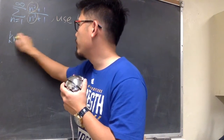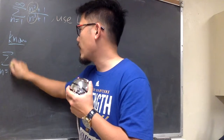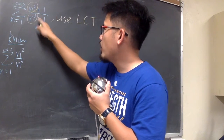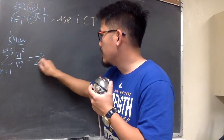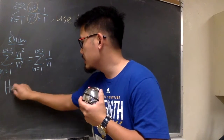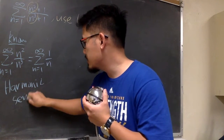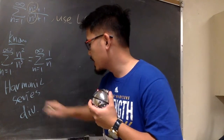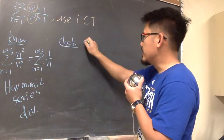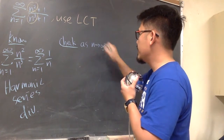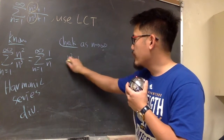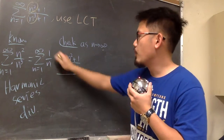We will first put down the things that we know: sigma when n goes from 1 to infinity. We look at n squared over n to the third power, which gives us sigma when n goes from 1 to infinity of 1 over n. We know this is the harmonic series, and we know the harmonic series diverges. For the limit comparison test, we are going to check the limit as n goes to infinity of n squared plus 1 over n to the third power plus 1, over 1 over n.